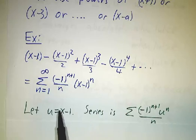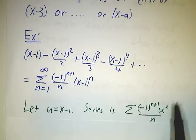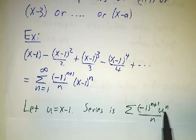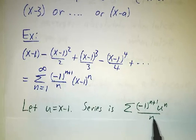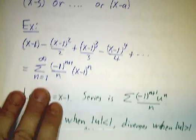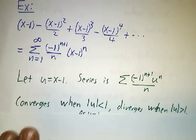If you think in terms of u, then this is just a power series, negative 1 to the n plus 1, u to the n over n. And we know how to handle that. In fact, we've seen this series before.